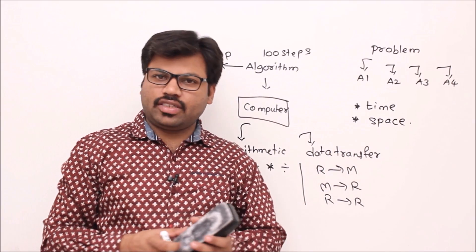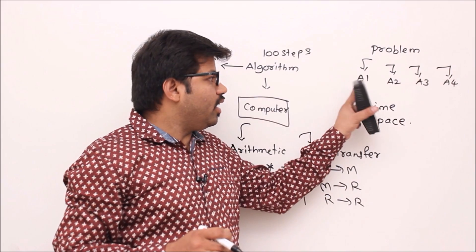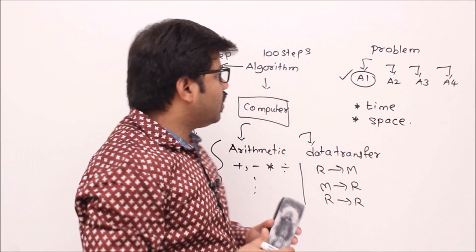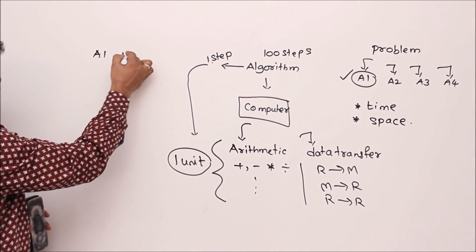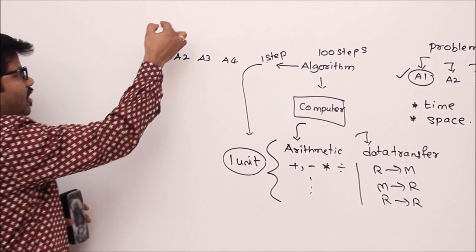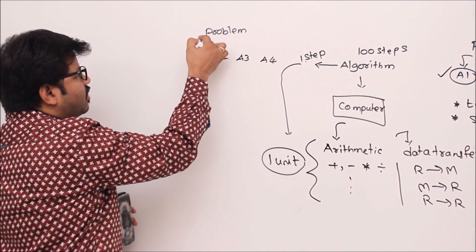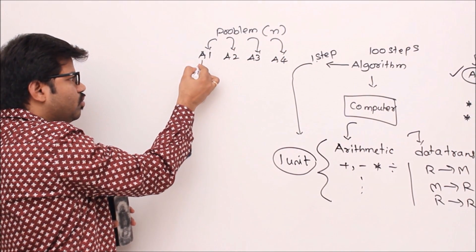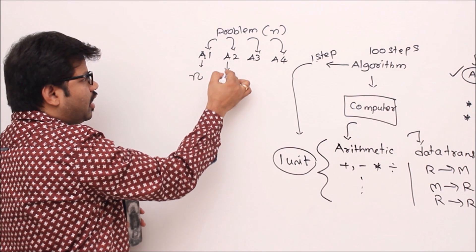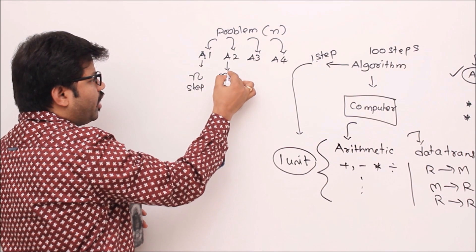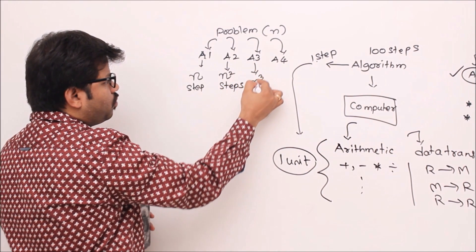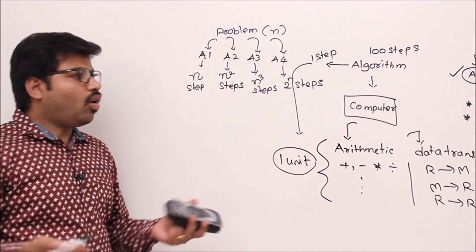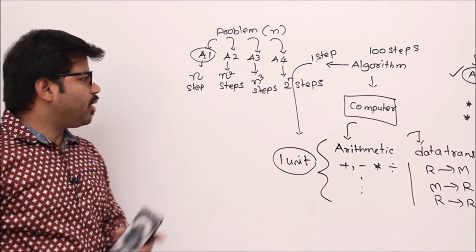With that idea, if an algorithm takes 100 steps, it takes 100 units of computer time. Now, consider algorithms a1, a2, a3, a4 for a problem with input size n. Suppose a1 takes n steps, a2 takes n² steps, a3 takes n³ steps, and a4 takes 2^n steps. Obviously, a1 is the best algorithm because it takes only n steps.